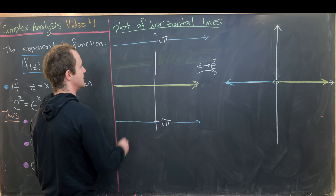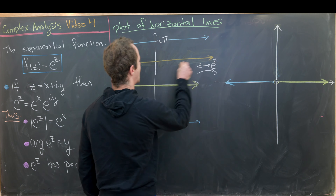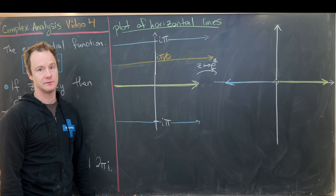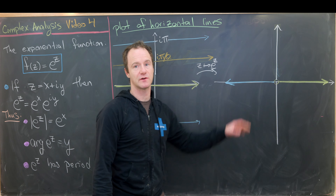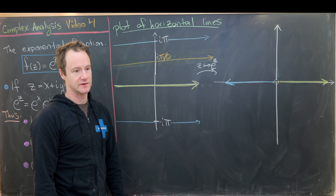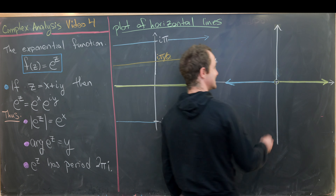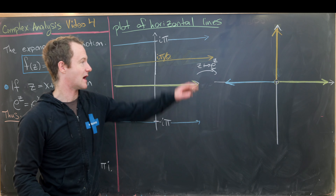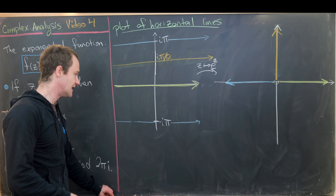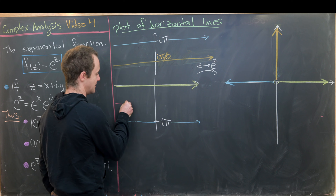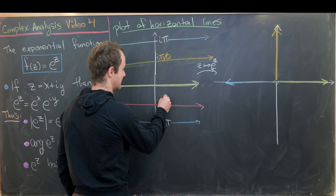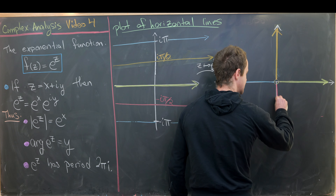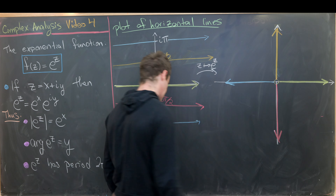Let's go somewhere in the middle — the horizontal line at iπ/2, where the imaginary part is always π/2. That gets mapped to points where the argument is always π/2, which is exactly the positive imaginary axis. Likewise, the line at minus iπ/2 maps to points where the argument is always minus π/2, giving us the negative imaginary axis.